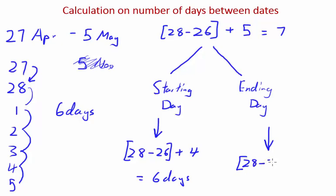Let's try ending day. How many days in April? 28 minus 27, because we're including the ending day we can't include the first day, so 28 minus 27 is 1 plus because we're including the ending day 5, six days. And this method can be used in whatever dates you get during the year.